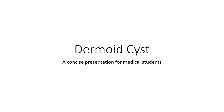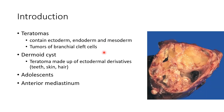Hello guys, this is Indianmedico, and in this video we are going to see about dermoid cysts. Teratomas are tumors that contain ectoderm, mesoderm, and endoderm. Mediastinal teratomas are tumors of branchial cleft cells.